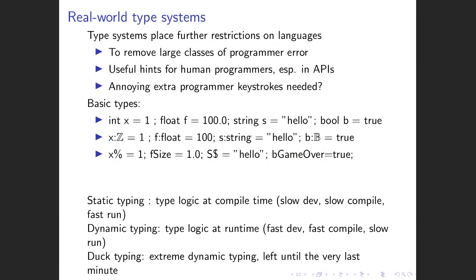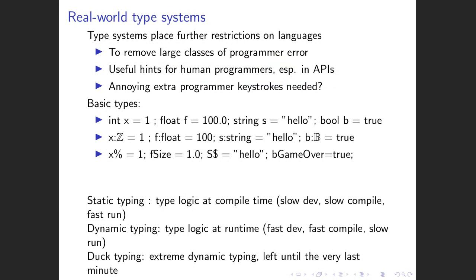Why do some languages make you declare types and other languages don't? Advocates of typing will argue that types help to remove large classes of programmer error - they prevent the programmer from doing silly things. From a software engineering point of view they can also give human programmers information about what's going on, especially if you look at an API and see someone else's functions covered in types - that tells you what kind of input is expected. So types are often used as a form of contract in contract-oriented programming.